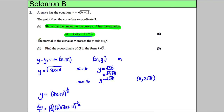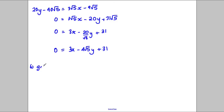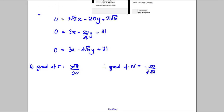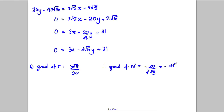Now for part B: the normal to the curve at P crosses the y-axis at Q; find the y-coordinate in the form k root 5. The gradient of the tangent was 3 root 5 over 20, so the gradient of the normal is the negative reciprocal, which is negative 20 over 3 root 5. Rationalising gives negative 4 root 5 over 3. That's the gradient of the normal.